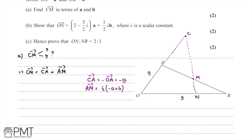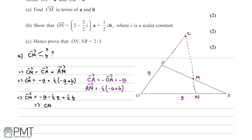We can now substitute these values back into our equation for CM. This gives us negative a plus one half of (negative a plus b). Expanding the brackets: we have negative a, then subtract one half a, then add one half b. Tidying this up, the vector CM is equal to negative three over two lots of a plus one half of b.